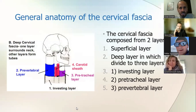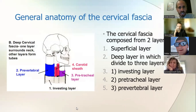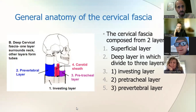The cervical fascia is composed of two layers: a superficial layer and a deep layer. You can divide the deep layer into three different layers — from superficial to deep: the investing layer, the pretracheal, and the prevertebral. I'm going to go through each of these layers and tell you about their anatomy and clinical significance.